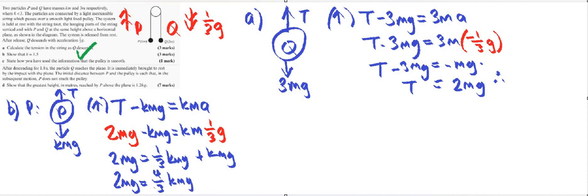So that means 2mg is equal to four thirds of kmg. Therefore I can divide both sides by mg, and now I have 2 equals four thirds of k. Therefore k is equal to, multiplied by the reciprocal, six over four which we know is 1.5. Therefore we have shown that k equals 1.5.